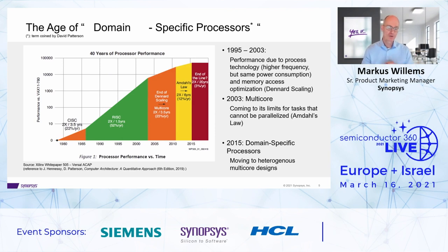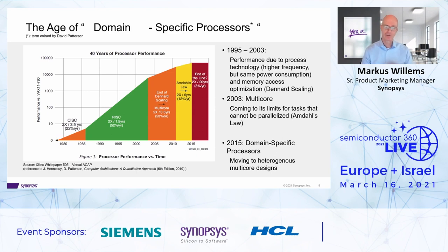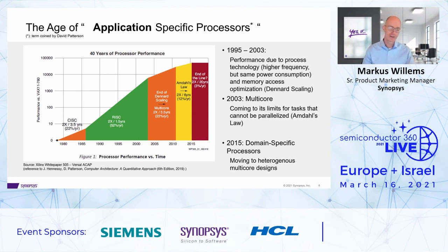Then we moved to parallelizing these things, going to homogeneous multi-core designs, having multiple of these processors instantiated. But of course, this came to a certain limit when it was no longer possible to parallelize the task. It was about five, six, seven years ago that more and more designs moved to heterogeneous multi-core designs, where you have multiple processors tailored and specialized to a specific workload. That is what we often refer to as domain-specific processors — it's really about heterogeneous multi-core design with processors tailored to specific needs. Consider application-specific processor and domain-specific processor as synonyms.